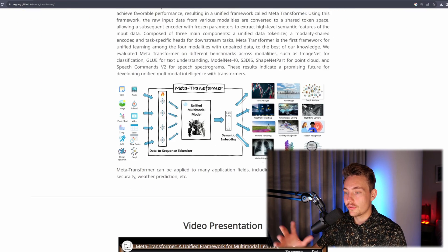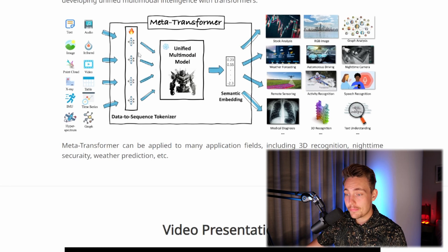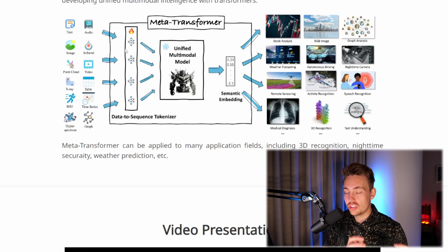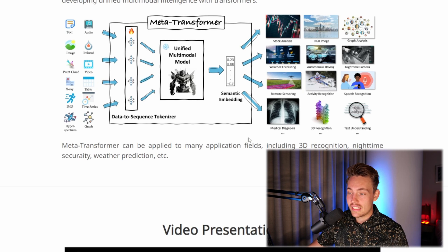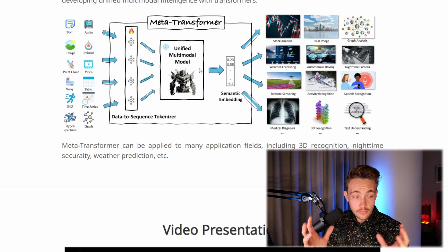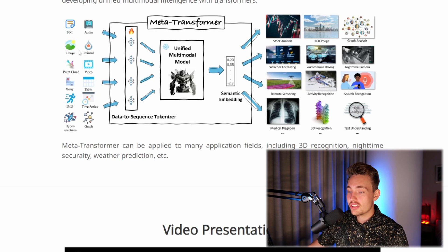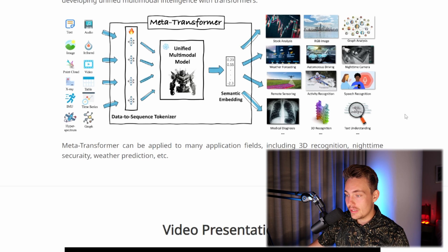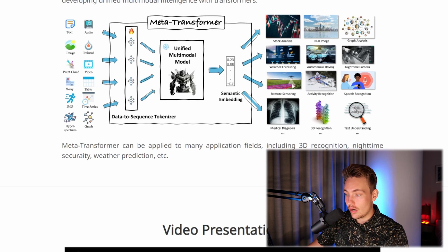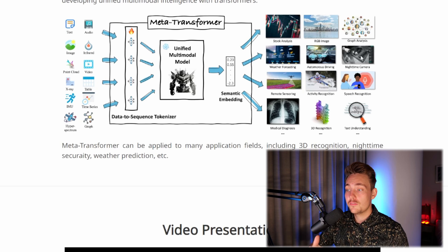Here's a quick overview of the architecture. We have the unified multimodal model as the backbone, and then we have this data-to-sequence tokenizer. This is actually the most important thing from this research paper — how to achieve multimodal learning. The transformer itself is just a standard transformer; the key is how to get our data into the same space using the same tokenizer. Once we have the data in the same space, we feed it into the transformer model and train. They have different data-to-sequence tokenizers depending on the input, and the output is a semantic embedding that can be applied to RGB images, graph analysis, autonomous driving, activity recognition, sensing, and more — by fine-tuning with specific heads for specific tasks.